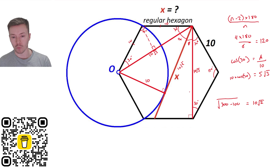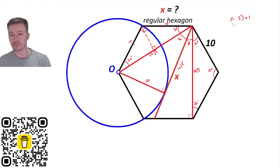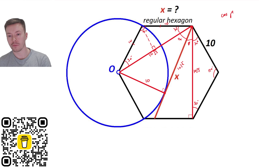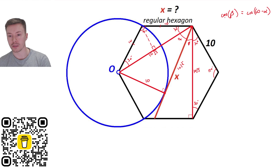I'll clear some working space. Beta is 60 minus alpha. To work out x we use the hypotenuse and adjacent, so that's cosine. We need cos beta. Cos beta equals adjacent 10√3 over x. Rearranging gives x when we have a value for cos beta. Cos beta equals cos(60 − alpha).